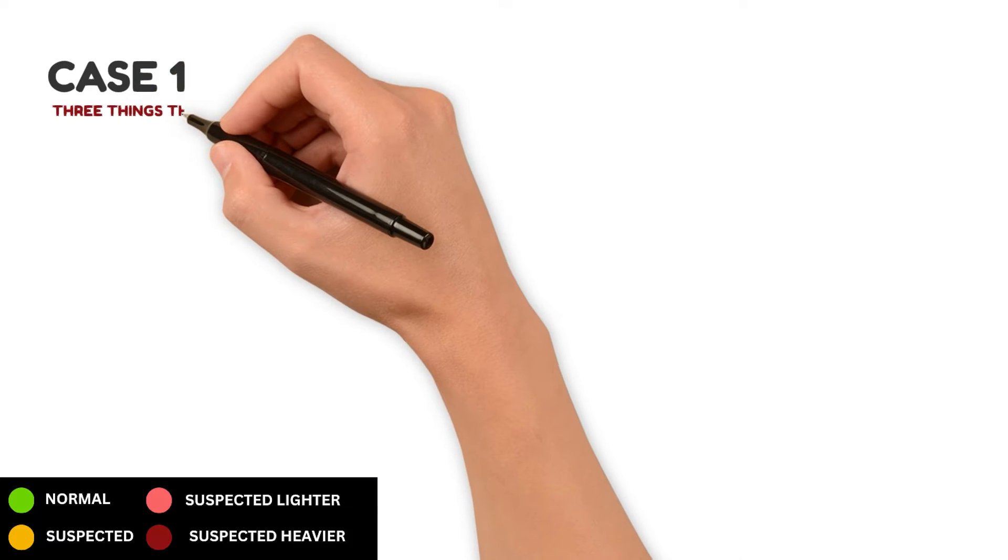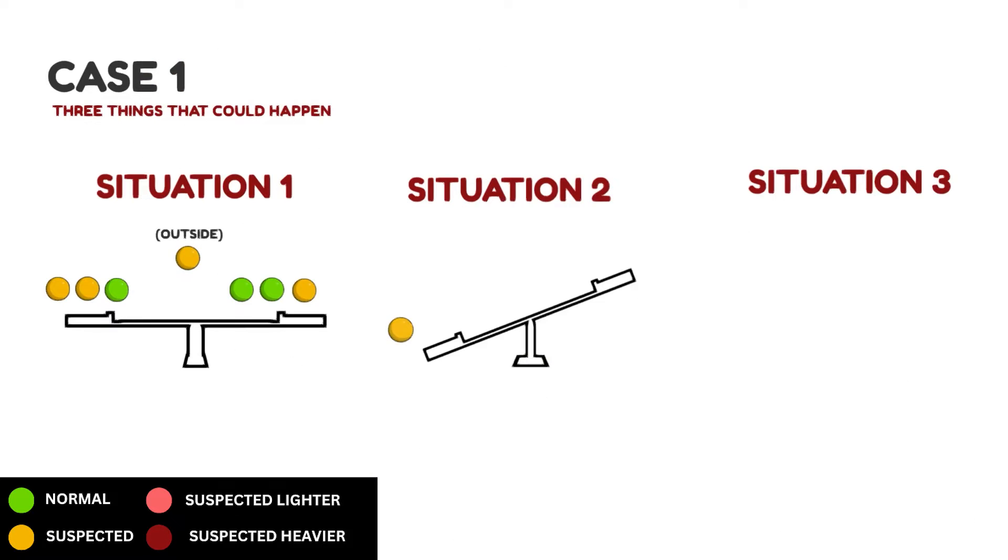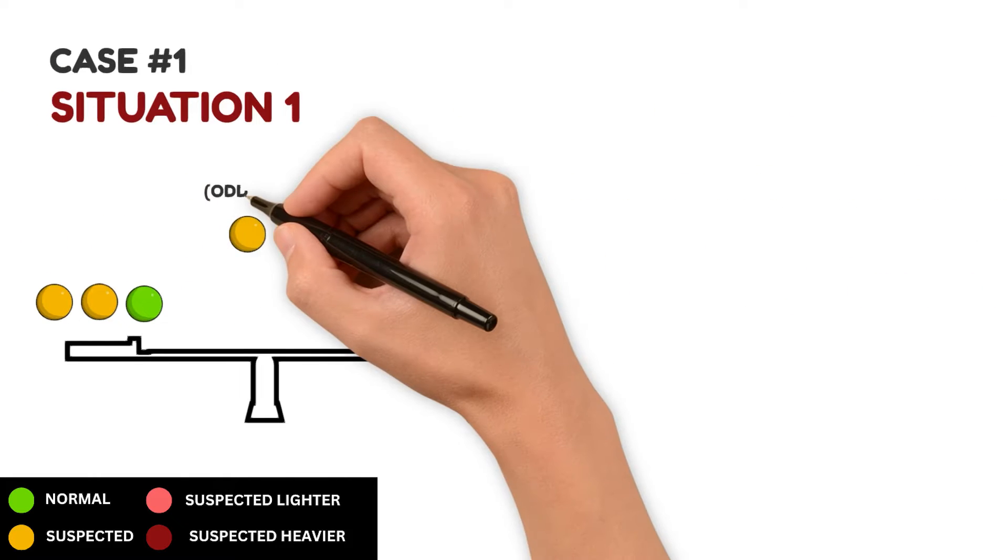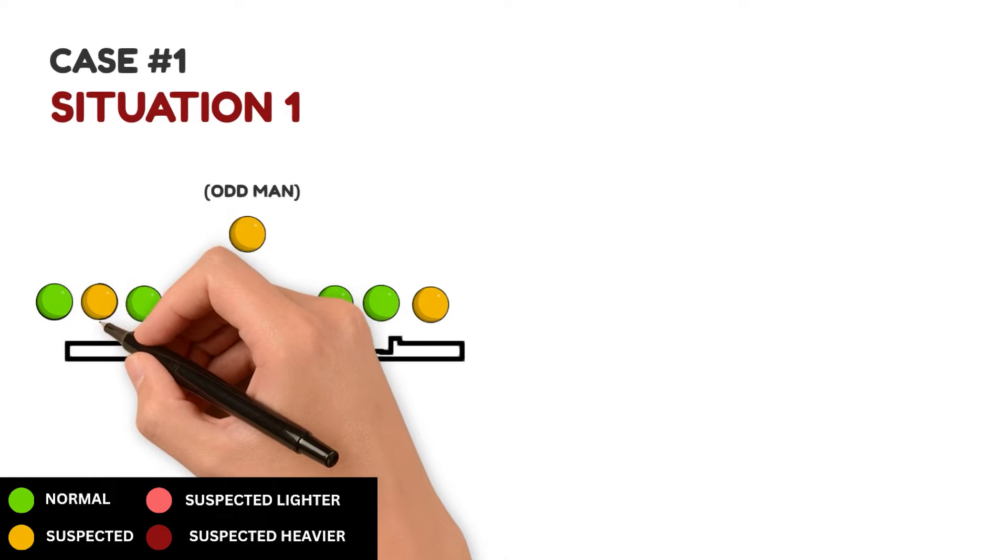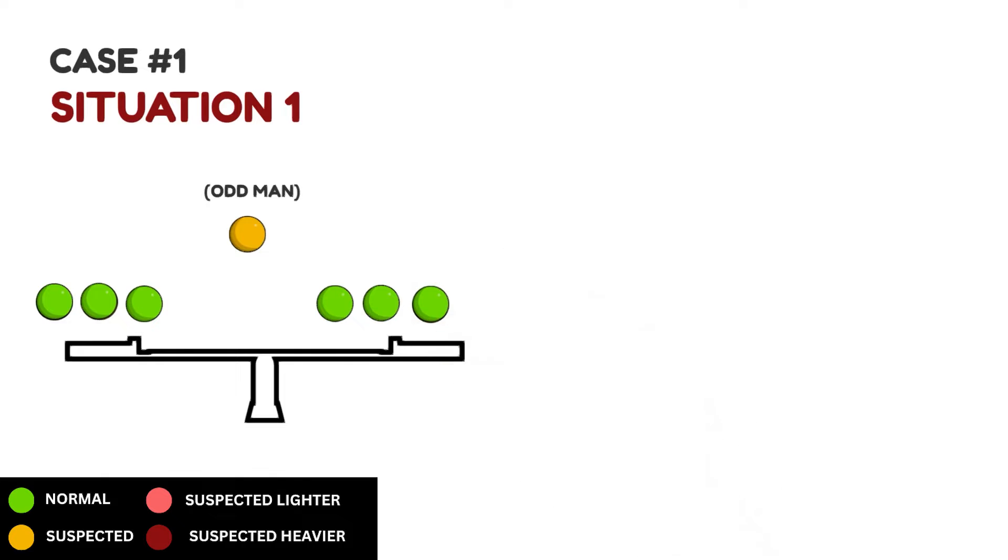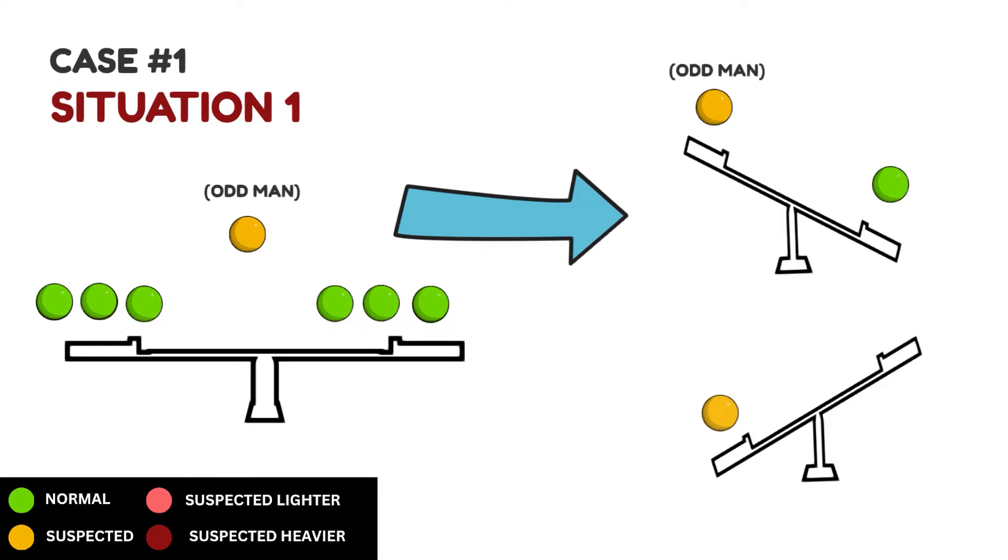Where should we put these three suspects? There are only two sensible options and you need to balance them with three regular men. Both ways work great, but I'll go with the second one. Then there are three things that could happen. They can balance, shift to the left, or shift to the right. If they balance, it means the odd man is not on the seesaw. So we mark the guys on the seesaw as green. Next, just weigh the odd man against any regular guy in the third go, and you'll find out if the odd man is lighter or heavier.